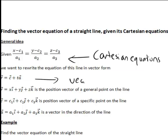r equals c plus t times a, where r is the position vector of a general point xyz on the line, c is the position vector of a specific point on the line, and you'll see that's where the c1, c2, c3 come in, and a is a vector in the direction of the line.